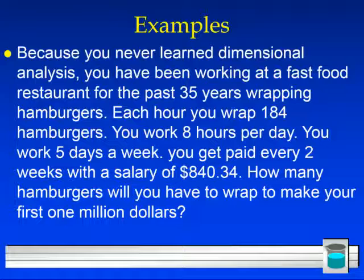Because you never learned dimensional analysis, you have been working at a fast food restaurant for the past 35 years wrapping burgers. Each hour, you wrap 184 hamburgers. You work 8 hours per day, and you work 5 days per week. You get paid every two weeks with a salary of $840.34. How many hamburgers will you have to wrap to make your first $1 million dollars? You're going to do that on your own. Again, contact me if you want to check for the correct answer. We are practicing our dimensional analysis using that crosshair style unit factor label.